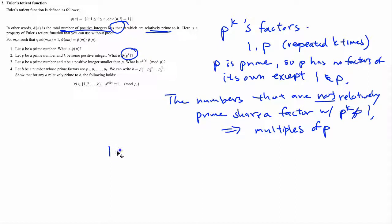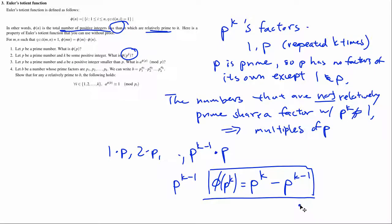So now, the multiples of p are, of course, 1 times p, 2 times p, and so on and so forth until you hit p^(k-1) times p. And so there are, of course, p to the k minus 1 of them. And if you start with all of the numbers less than p^k and subtract the multiples out, you get this many numbers as your answer.